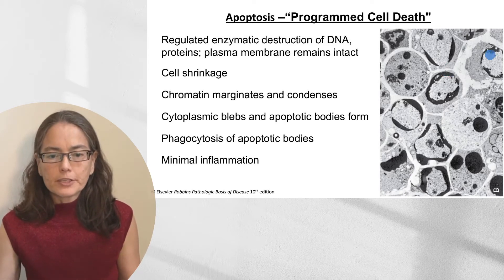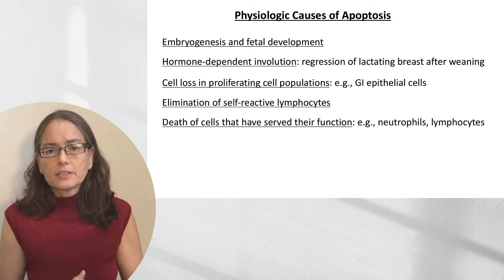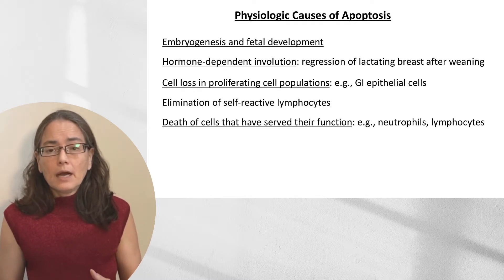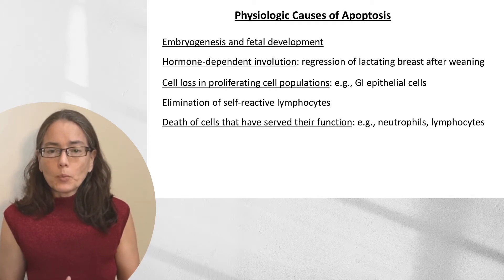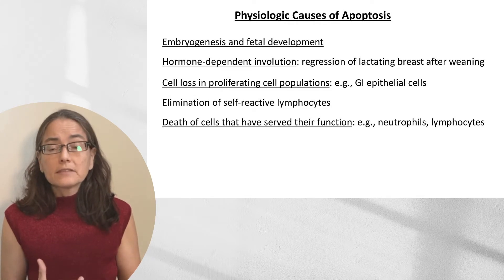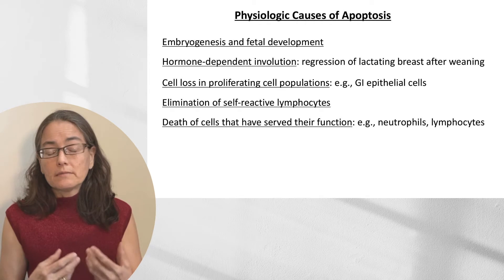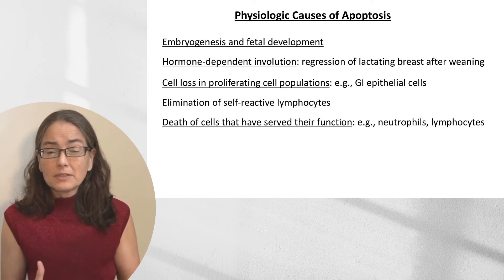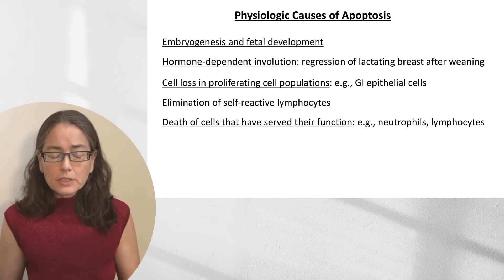There are physiologic causes of apoptosis, such as during embryogenesis and fetal development, and hormone-dependent involution. An example would be during lactation: the breast grows in size, but after weaning, those cells are no longer necessary and will die. You don't want these unnecessary cells to cause necrosis and inflammation, which would be damaging to the body, so they involute using apoptosis.